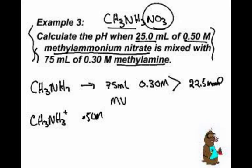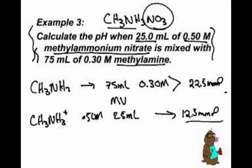So it's 0.50 molar and 25 milliliters. When you multiply those out, you get 12.5 millimoles. Now, do we have a buffer? We do. So with a buffer we can use the Henderson-Hasselbalch.